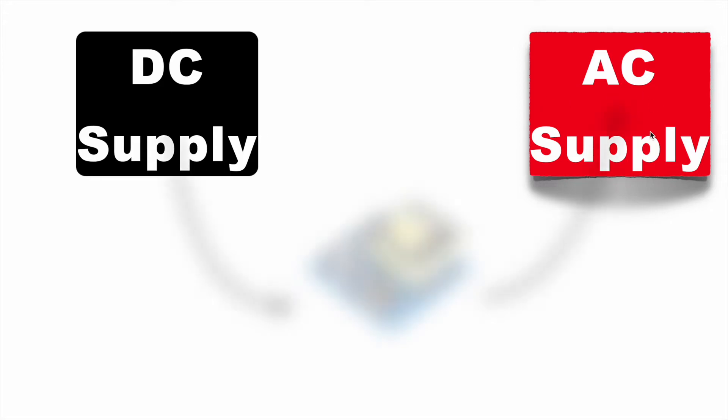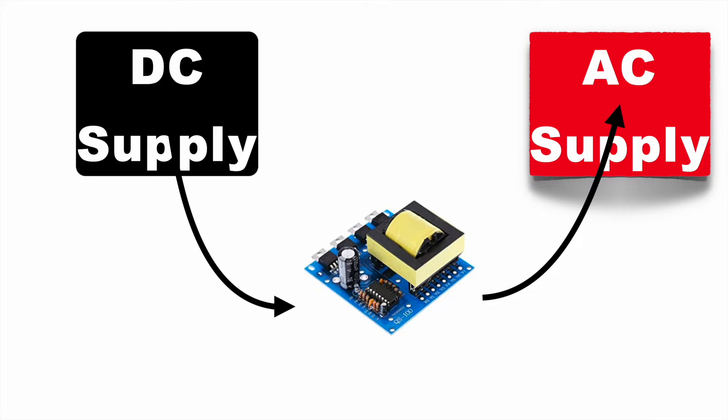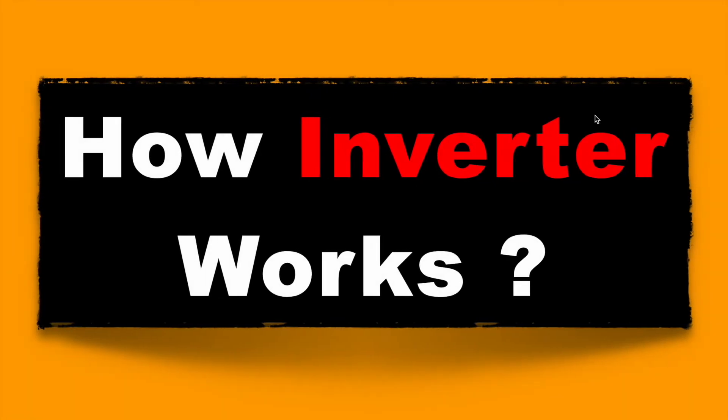To do this, we need an inverter. This inverter will invert the DC to the AC supply, and this can be further used in our home appliances. So let us understand first how this inverter works.